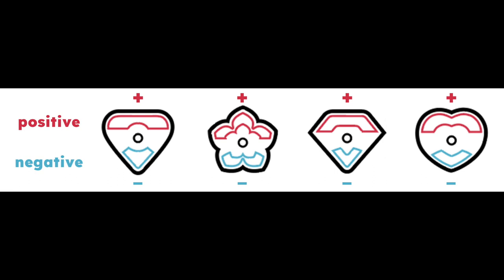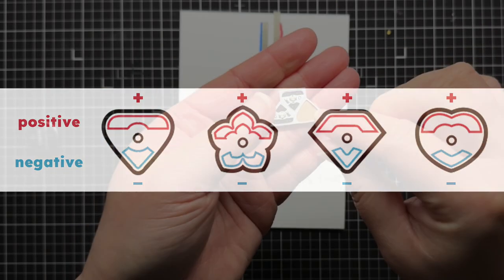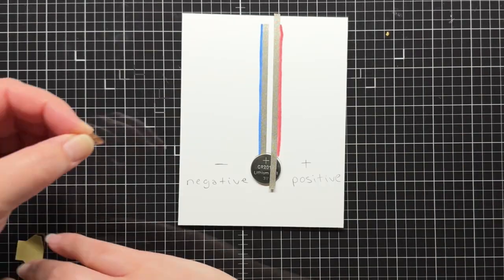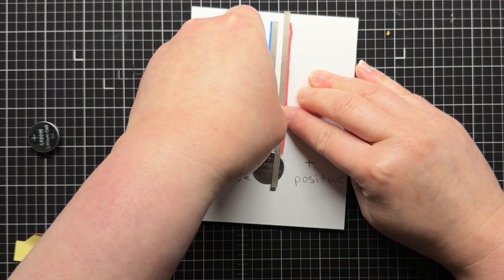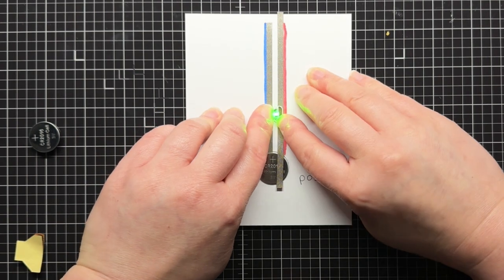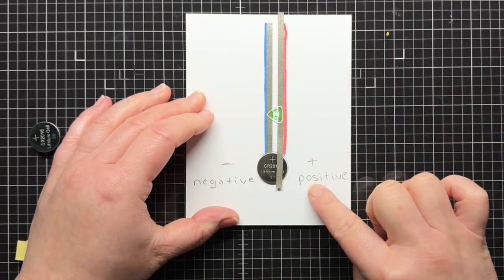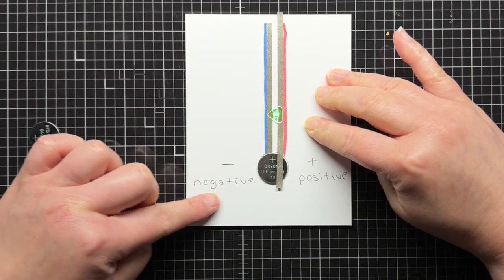An easy way to remember the difference is that we always want more positivity in the world, so the positive side is bigger on our stickers. No matter what the sticker's shape, the positive side will always be the bigger side. So I carefully peel off a sticker and then place it over my tape, making sure that the long positive side of the sticker covers the positive line of tape, and the negative point of the sticker covers the negative line of tape.